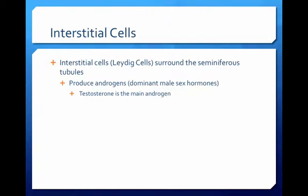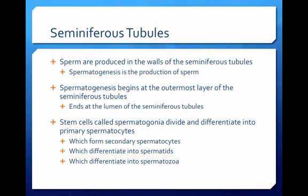In the interstitial tissue surrounding the seminiferous tubules are spaces that contain large interstitial cells called Leydig cells. These cells produce the androgens, which are the dominant male sex hormones. Testosterone is the most important androgen. Sperm are produced in the walls of the seminiferous tubules. The process of sperm production is called spermatogenesis. Spermatogenesis begins at the outermost cell layer in the seminiferous tubules and proceeds towards the lumen of the tubule.